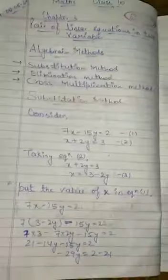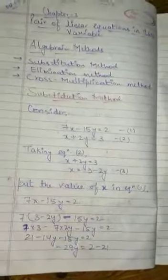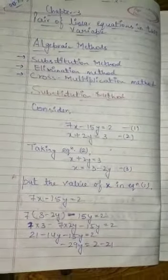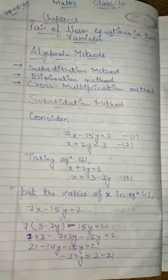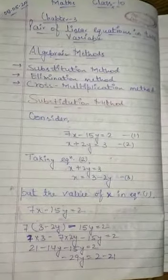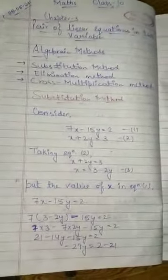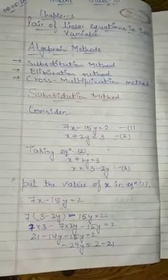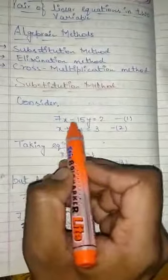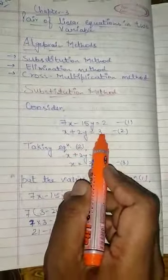The question is: find out the solution by using the substitution method. When the question mentions that you have to use substitution method, then you can use this method. So consider the first equation is 7x minus 15y equals 2, and x plus 2y equals 3. This is the first equation and this is the second equation.